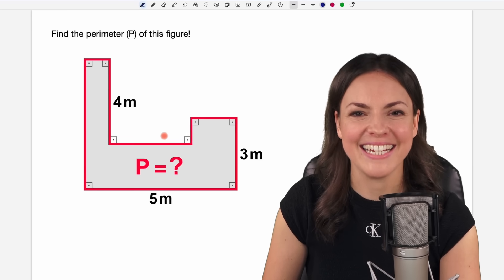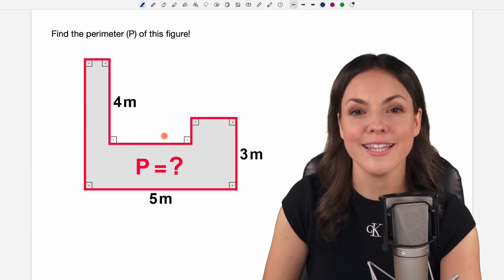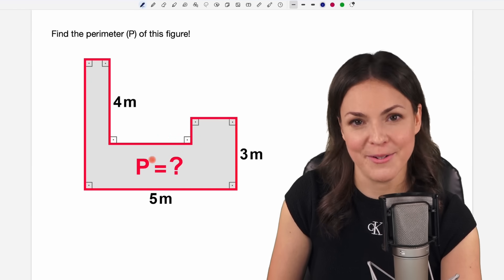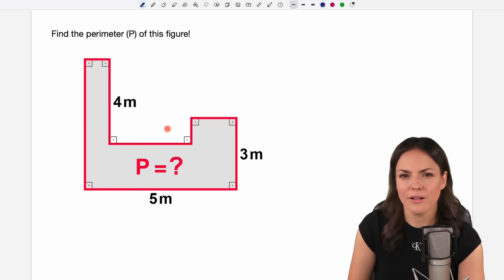Hello my lovelies, it's Susanna and today I want to show you how to find the perimeter of this figure. In general, if we want to find the perimeter, we have to find all the lengths of the sides and add them.